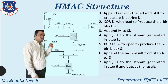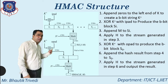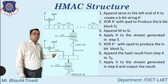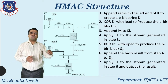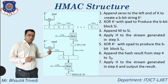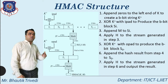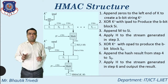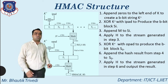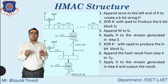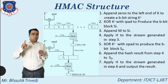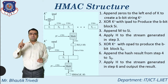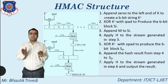Step six: concatenate or append the hash result from step four to So. Then apply the hash function once more using IV on (So concatenated with the hash result). Whatever you generate is known as HMAC(K, M) — the Hash-Based Message Authentication Code.